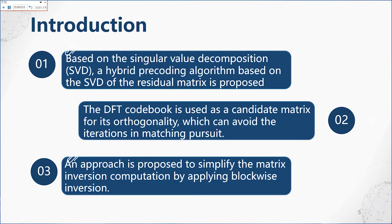In this paper, by modeling the millimeter wave MIMO system, we compare three improved algorithms. The first, based on singular value decomposition, is a hybrid precoding algorithm based on the SVD of the residue matrix, referred to as RMSVD. The second uses the DFT codebook as a candidate matrix for its orthogonality, avoiding iterations in matching pursuit, referred to as OBMP. At last, an approach that simplifies the matrix inverse computation by applying blockwise inversion is referred to as MIBSOMP.